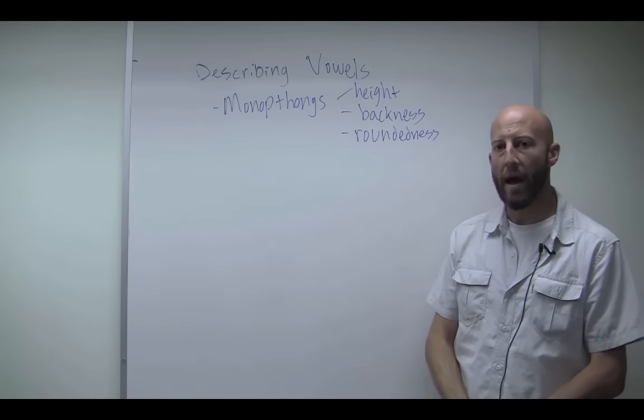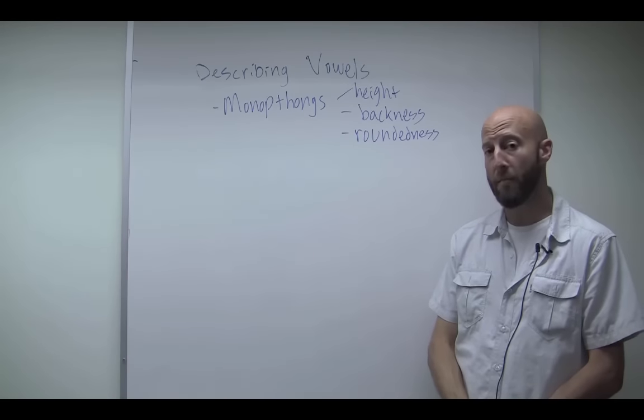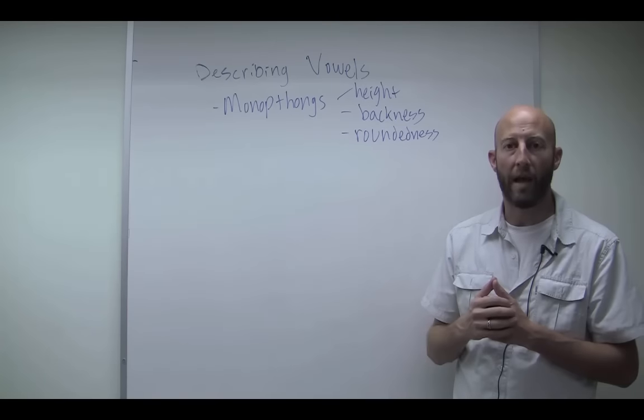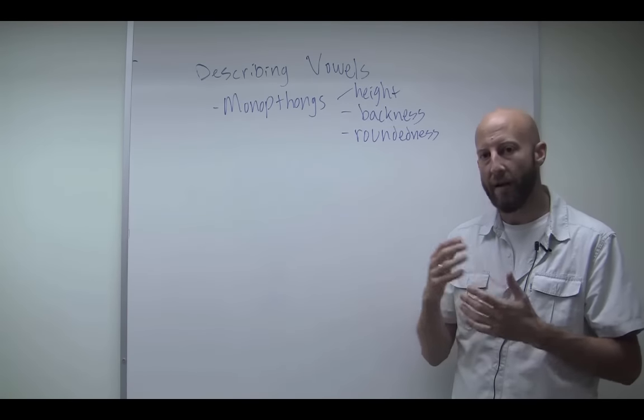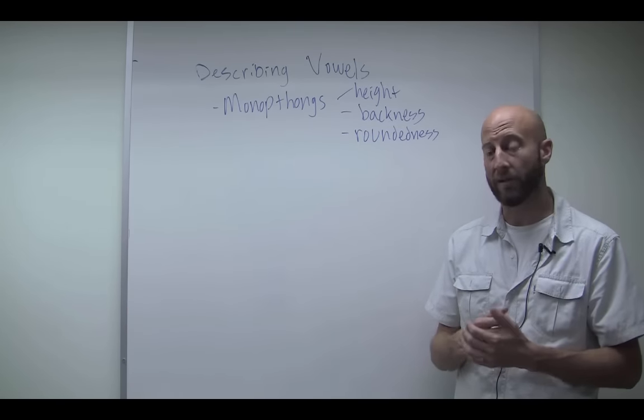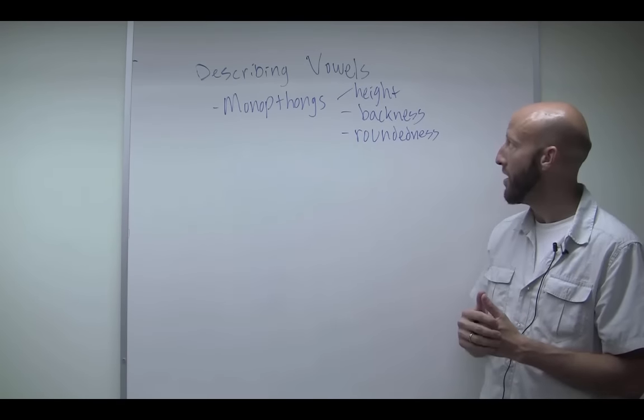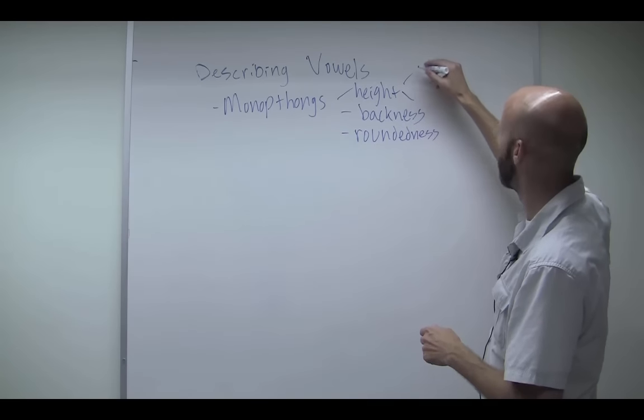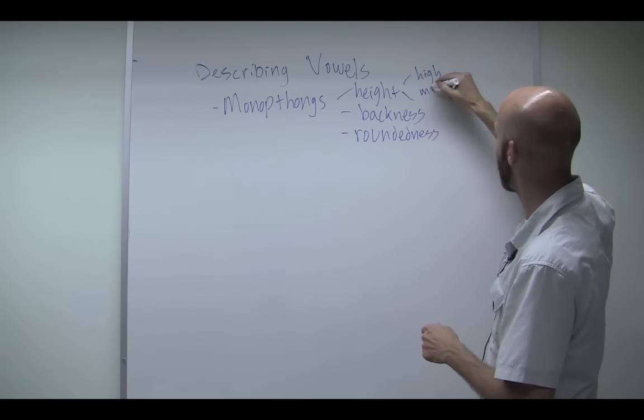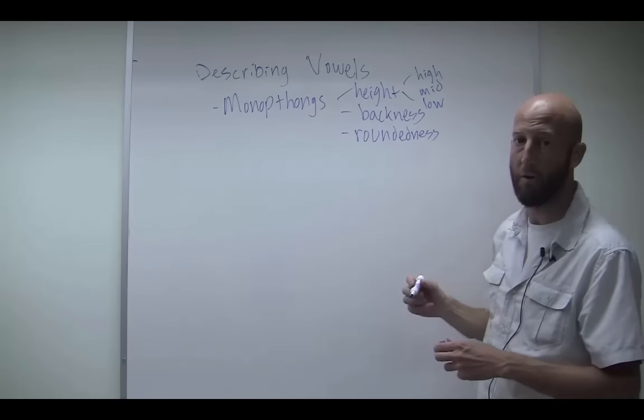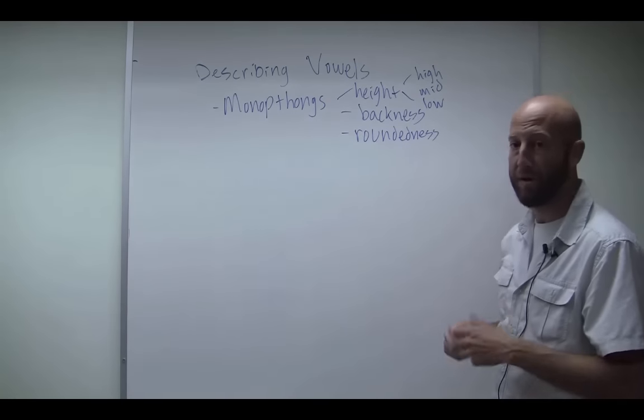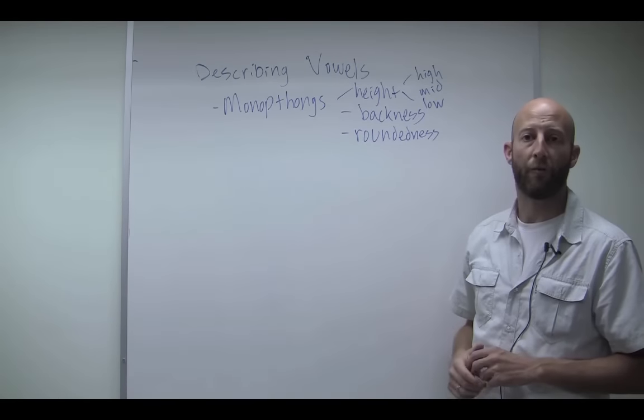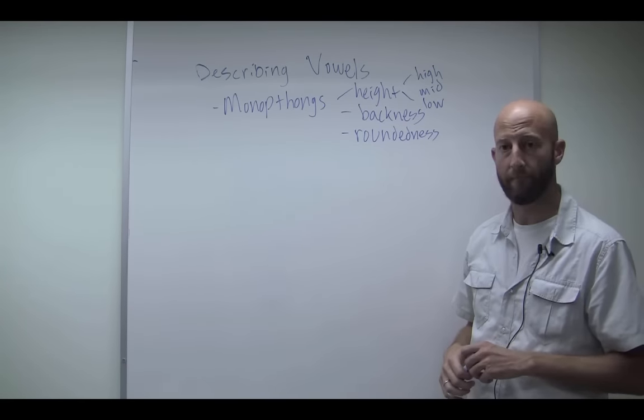So height has to do with how high the tongue is in the mouth. This is really tough for vowels to figure out what your tongue is doing compared to consonants because, again, we don't have a landmark that the tongue is touching up against. So you have to just get some practice with working with vowels and figure out exactly where your tongue is in the vocal tract. But anyway, let's take an example. There's basically three categories here for height. We have high vowels, we have mid vowels, and we have low vowels.